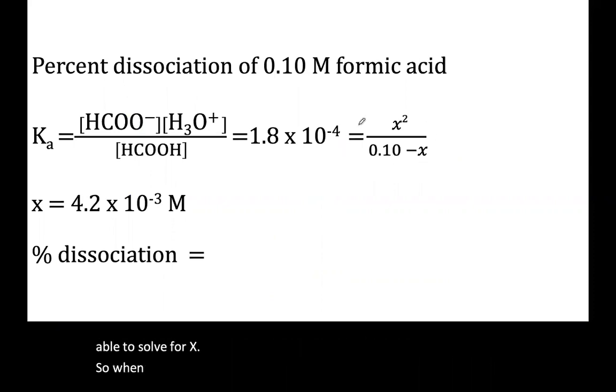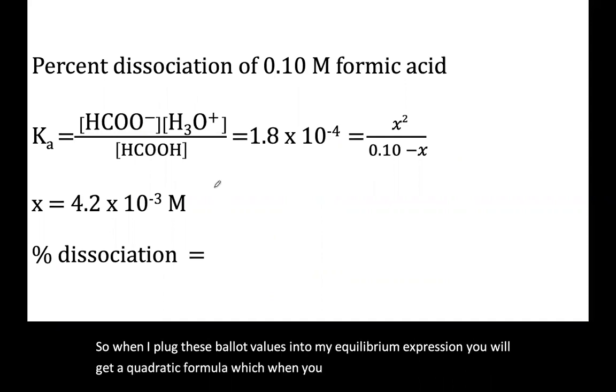So when I plug these values into my equilibrium expression, you will get a quadratic formula which when you solve you should get 4.2 times 10 to the negative third molar.